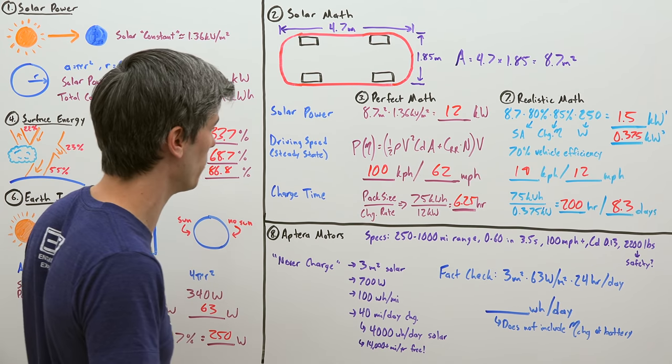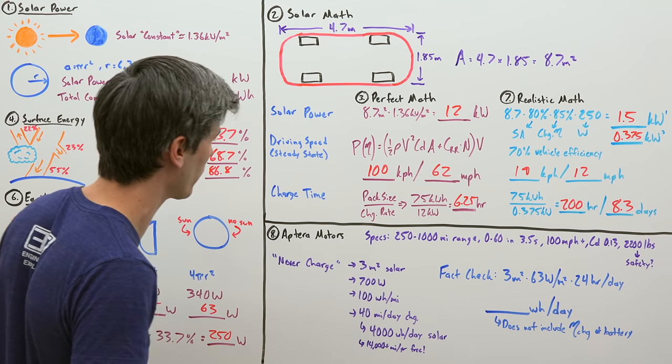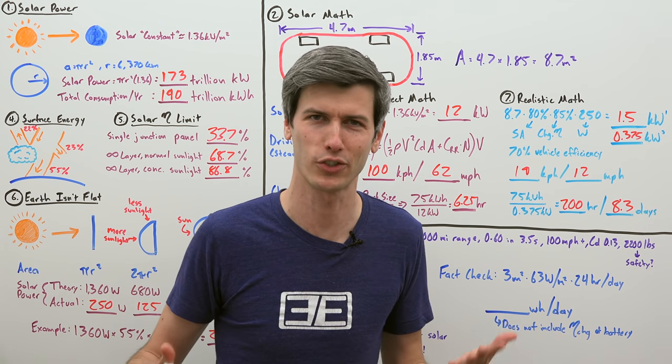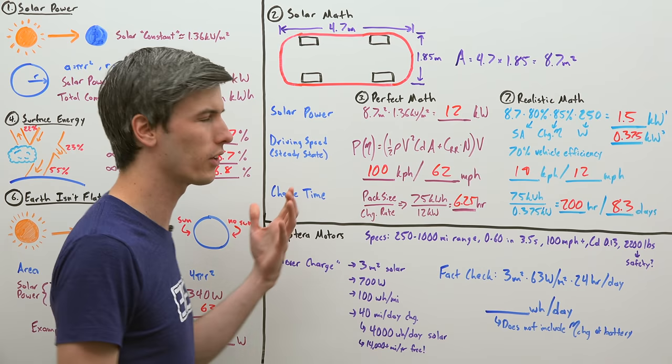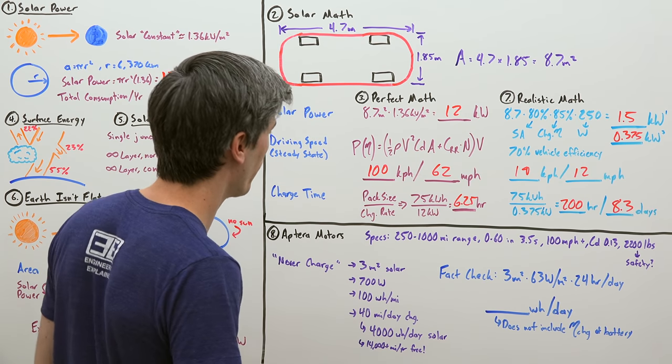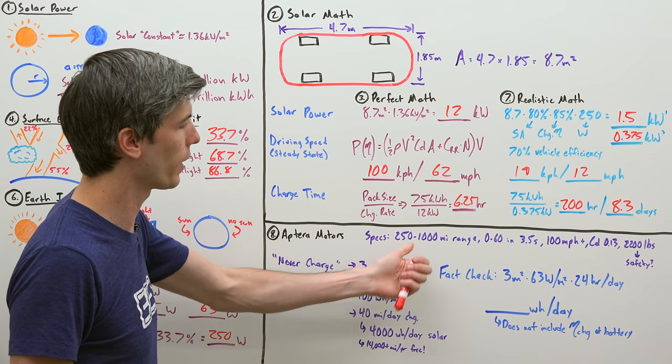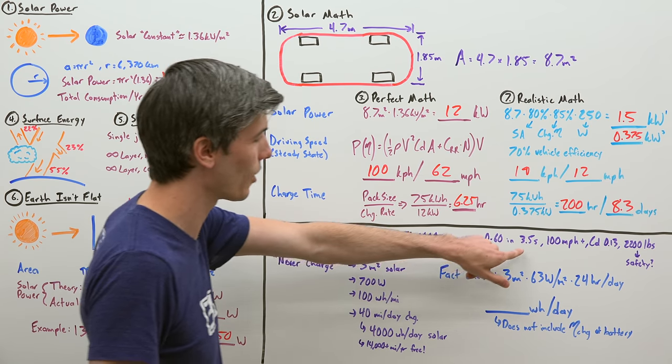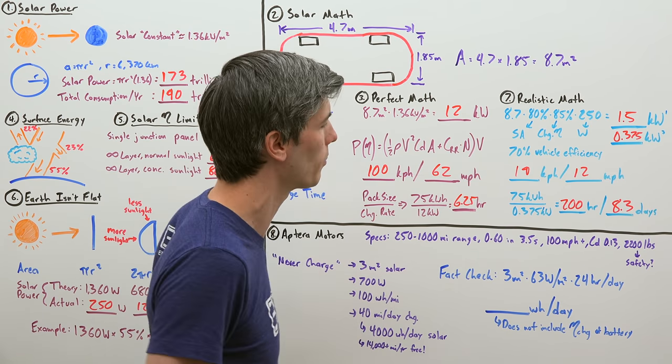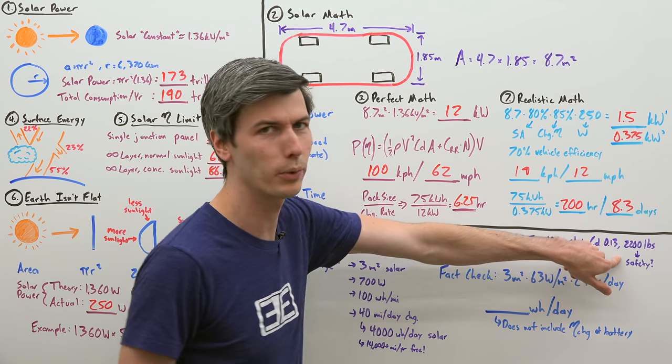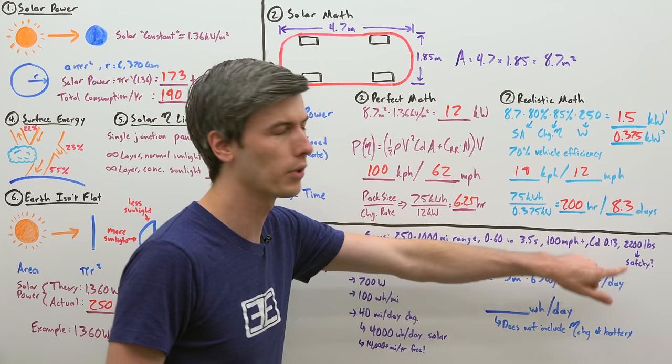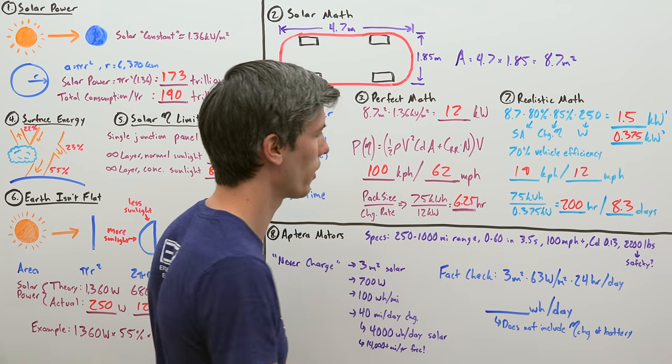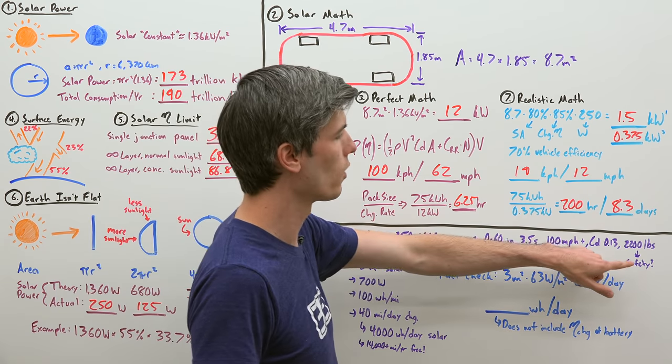However, I found a car made by Aptera Motors. Not yet made today, but they're planning on producing this vehicle. And the specifications are pretty wild. And they say that you'll never have to actually charge it depending on how much you drive, because it will get all of its energy from the sun. So the specifications of this car are pretty impressive. A range of about 250 to 1,000 miles depending on the battery pack that you choose. Zero to 60 in as low as 3.5 seconds. Over 100 mile per hour top speed. Drag coefficient of just 0.13. This is really the big driving factor of how they're able to make solar power work.